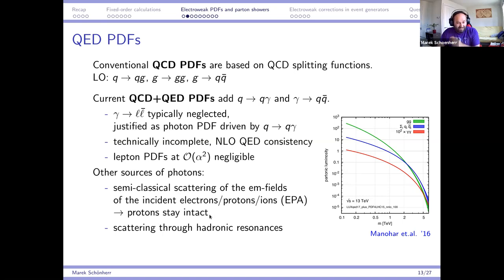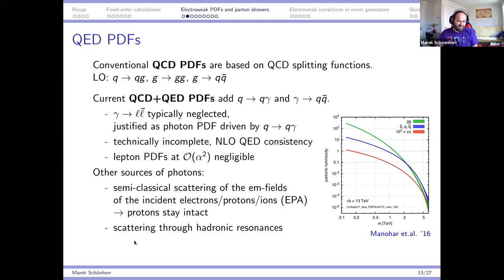In the equivalent photon approximation the protons stay intact, which can be detected with forward proton detectors. The flux is not very large for protons, so these are not the most important processes. However, for heavy ions with much larger charge, the equivalent photon approximation scales as charge to the fourth power, making it a quite significant effect. Scattering of heavy ion electromagnetic fields has been measured.